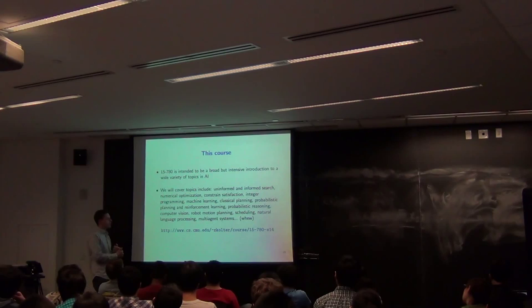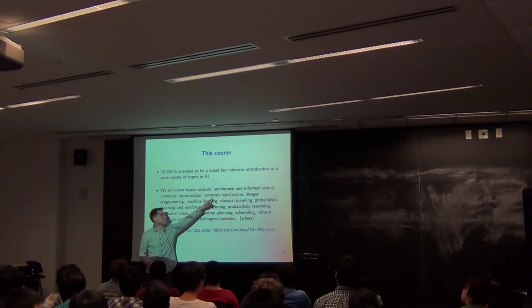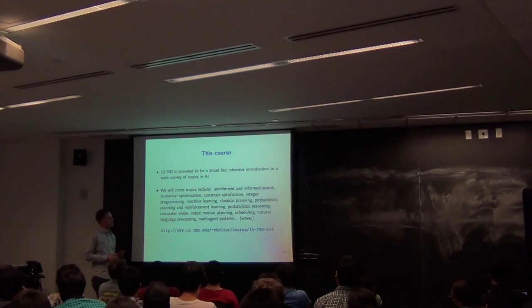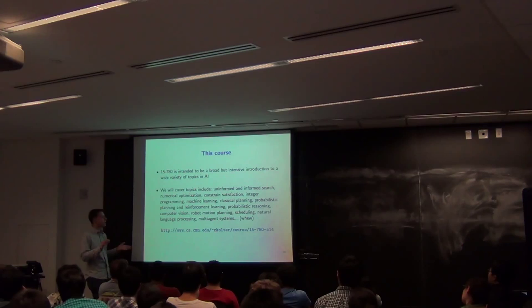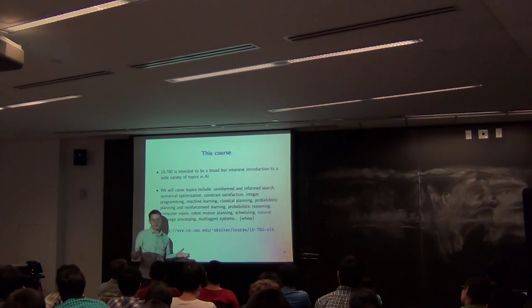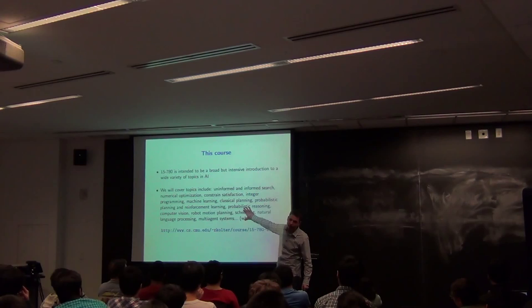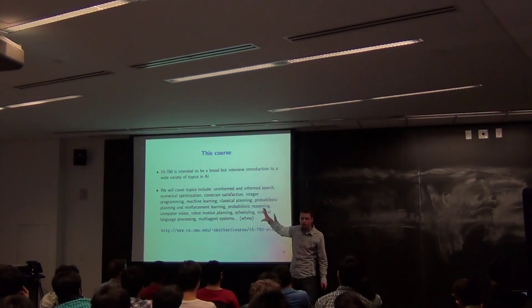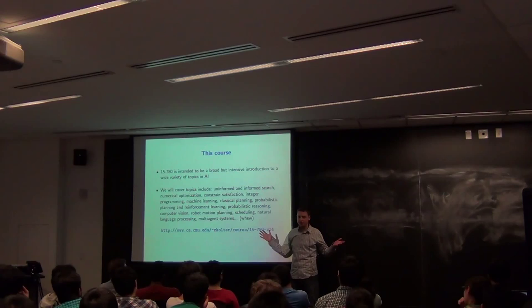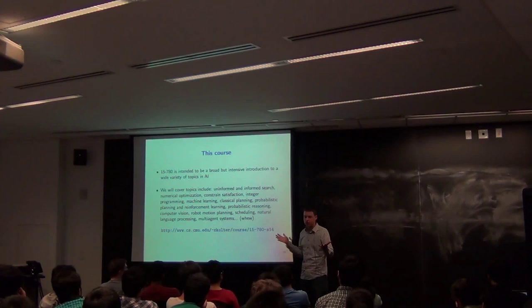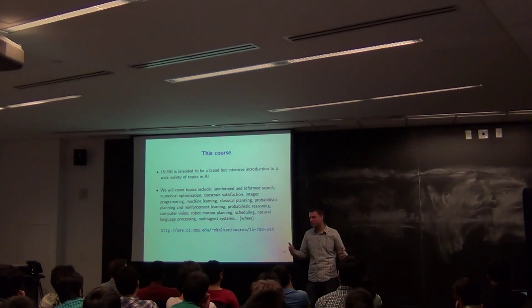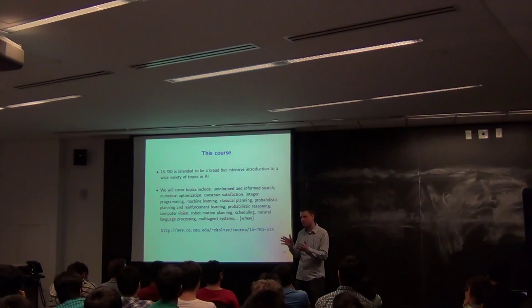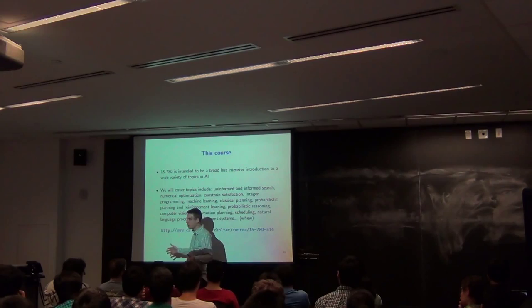What we're going to cover in this class includes: uninformed and informed search, numerical optimization, constraint satisfaction, integer programming, machine learning, classical planning, probabilistic planning and reinforcement learning, probabilistic reasoning, computer vision, robot motion planning, scheduling, natural language processing, and multi-agent systems. It's hard to even say, let alone do in one semester. There are entire courses on all these topics at CMU — this course is designed as an introduction to all of them for people who want a broad overview without spending a whole semester on each one.